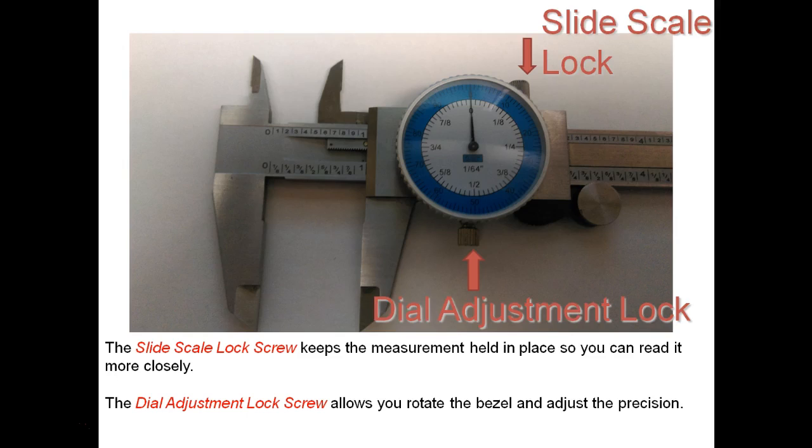Now also on that slider you'll see there's two screws. You have one on the top and one on the bottom. This one on the top here is known as your slide scale lock. The slide scale lock screw keeps the measurement held in place so you can read it more closely. What that allows you to do is once you get your measurement set, you can then tighten that down just a quarter turn and then you can remove the thing that you're measuring and then it'll hold that measurement in place so the slide won't move anywhere else. Also with the slide scale, if you have yours and you see it's kind of hard to move back and forth as you're sliding it, that might be too tight. You can just do a little quarter turn to loosen it and then allow you to slide it back and forth.